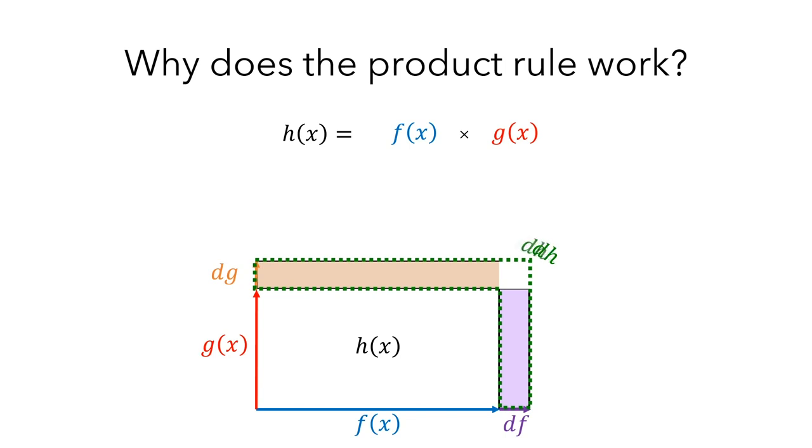Next, let's think about the area of dh. The brown rectangle has sides of length f and dg, so its area is dg times f. The purple rectangle has sides of length df and g, so its area is df times g. And the total area of dh is the sum of the areas of the brown and purple rectangles.